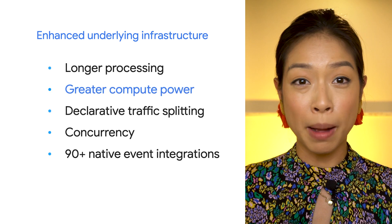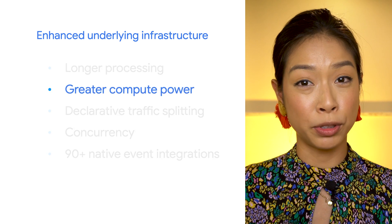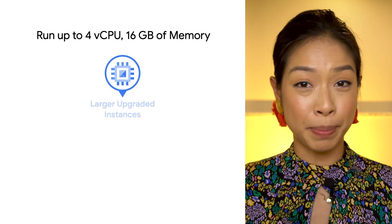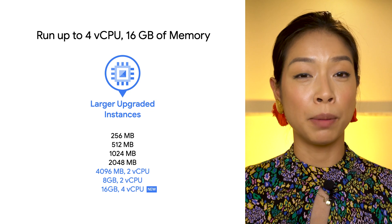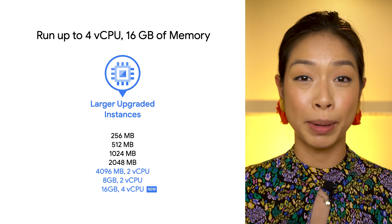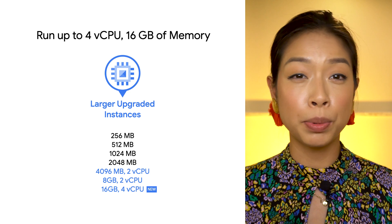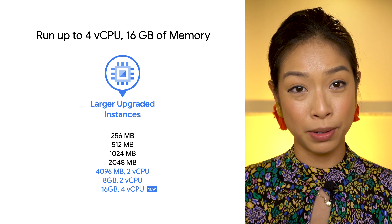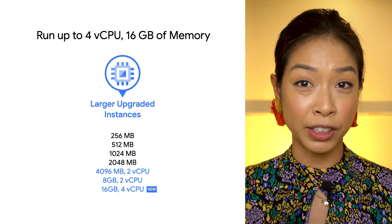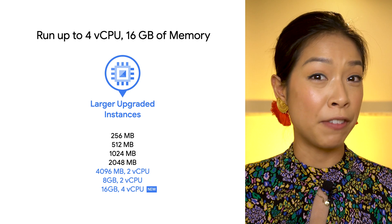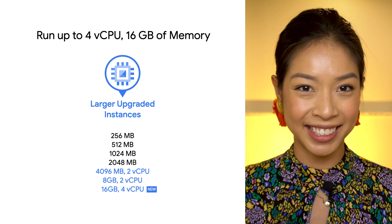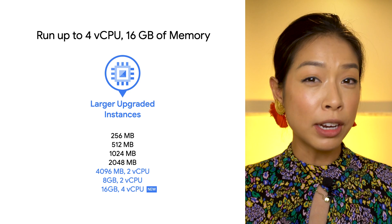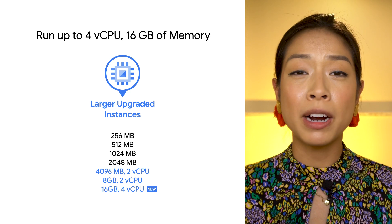Now let's talk about the greater amount of resources available to your functions in Second Gen. Previously you could only specify up to roughly eight gigabytes of memory with up to two CPUs per function instance. Now you're able to specify up to four vCPUs — double the amount — while also doubling the available memory up to 16 gigabytes. This can help resource-intensive workloads that need to process large files, write to an in-memory file system, or perform parallel processing.